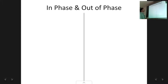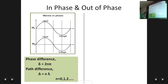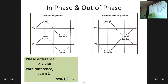The first case is waves in phase. This is when the crest of one wave comes over the crest of the other wave, and the trough of one wave overlaps with the trough of the other wave — we say the waves are in phase. The conditions for this are: the phase difference between the waves is an even multiple of pi, and the path difference is an integral multiple of the wavelength.